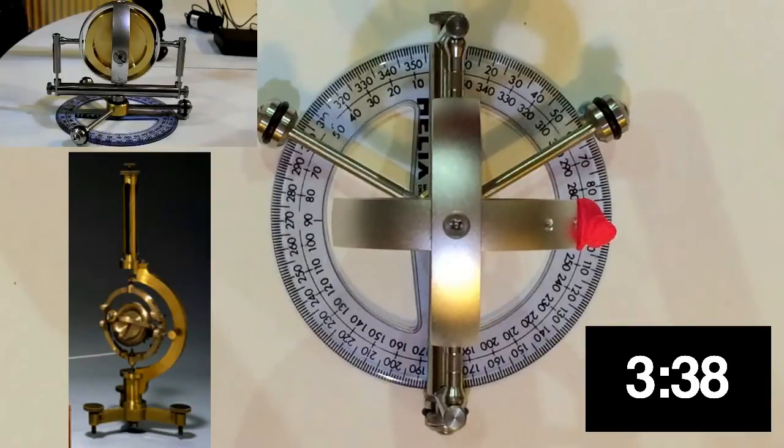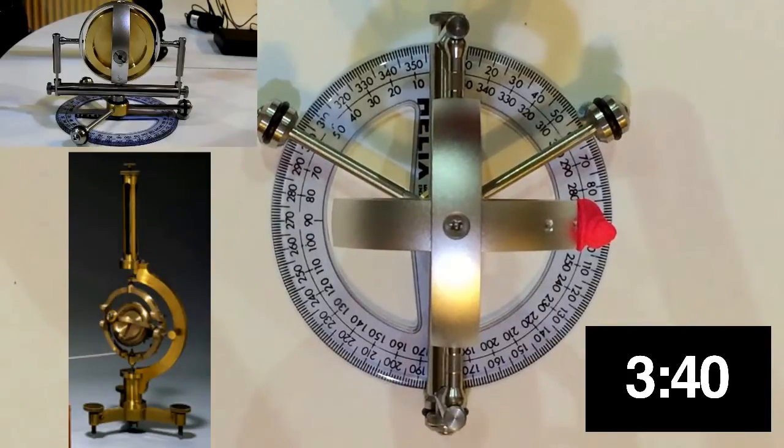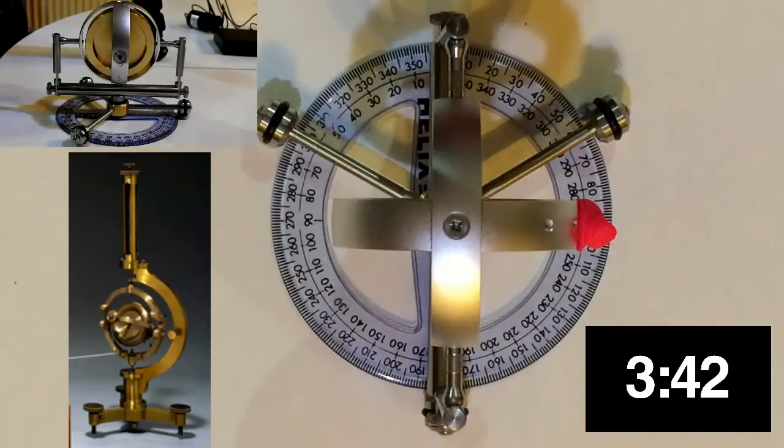Foucault named his spinning wheel a gyroscope from the Greek words gyros, which is revolution, and scopin, which is to see. He had seen the revolution of the earth with his gyroscope.